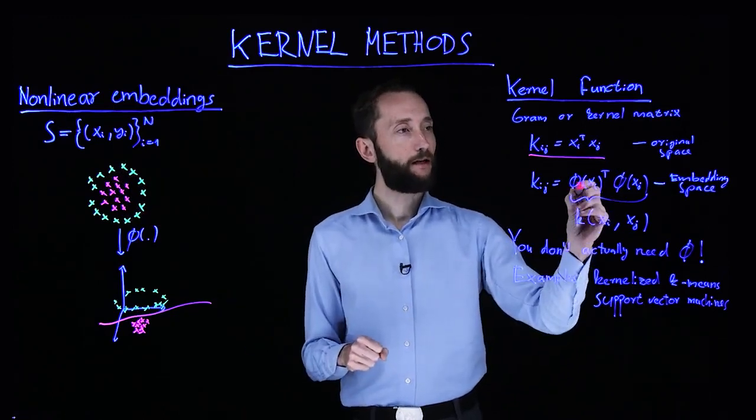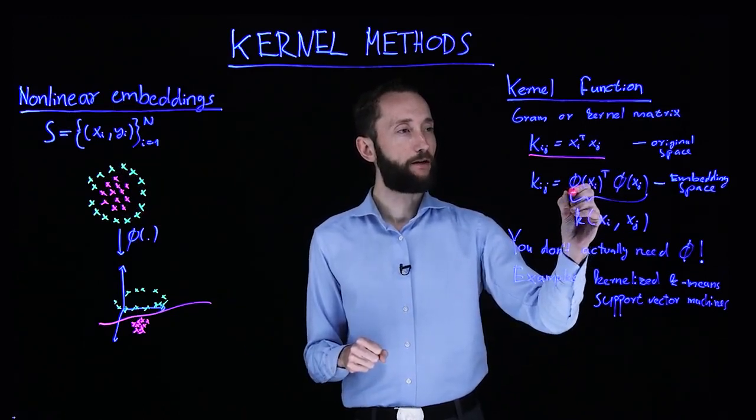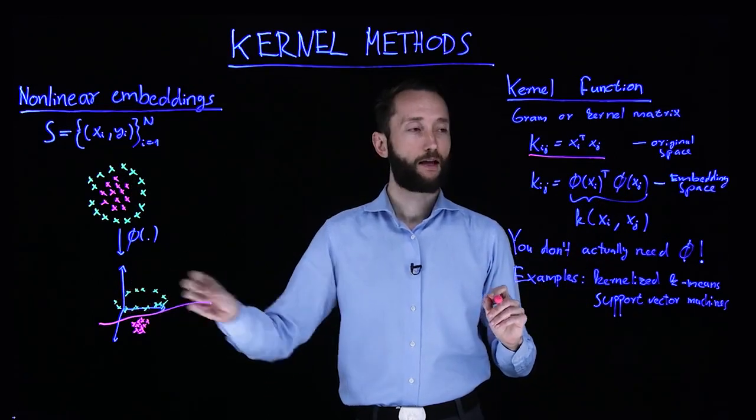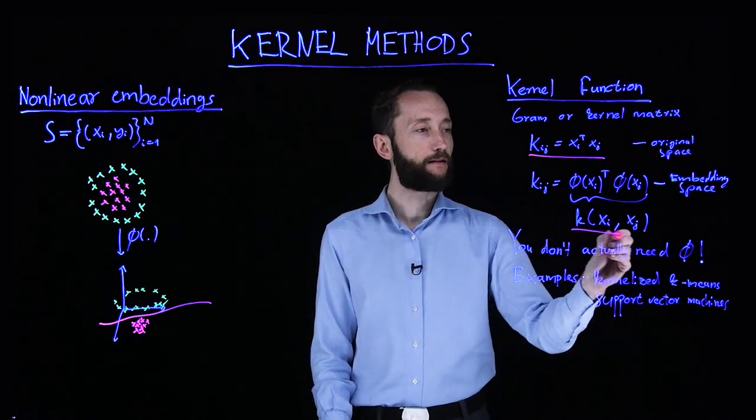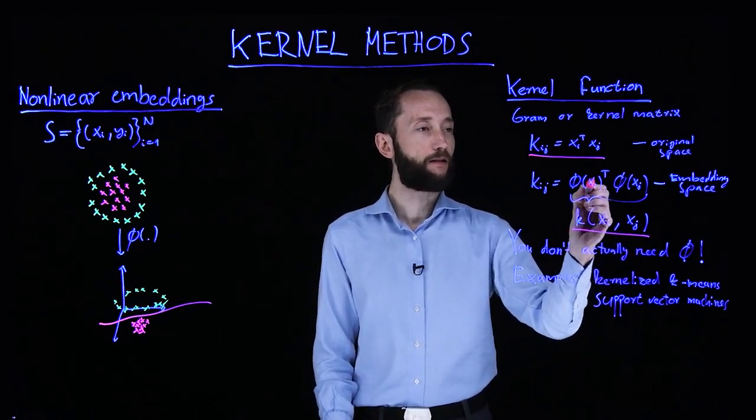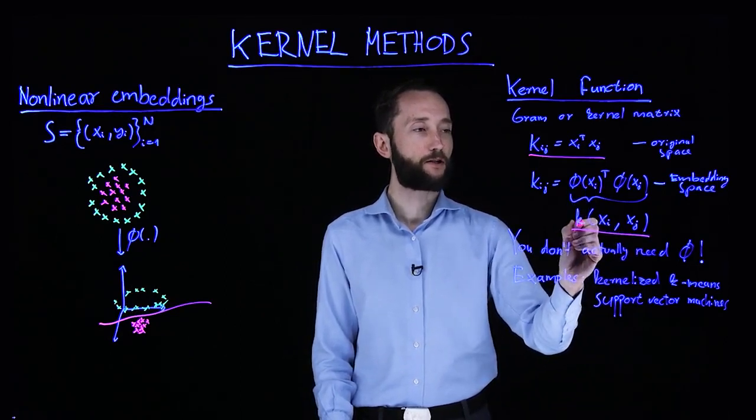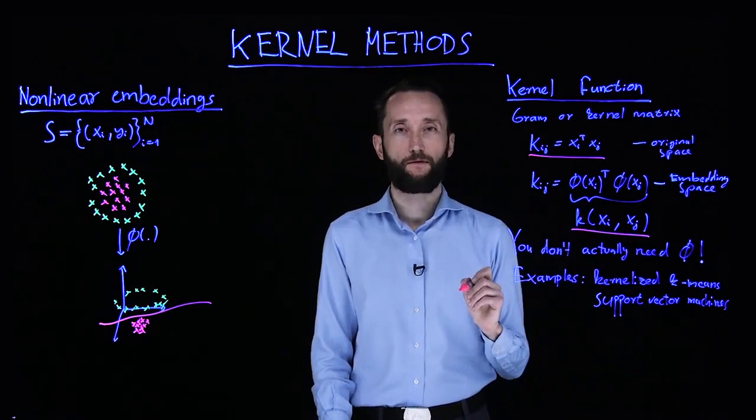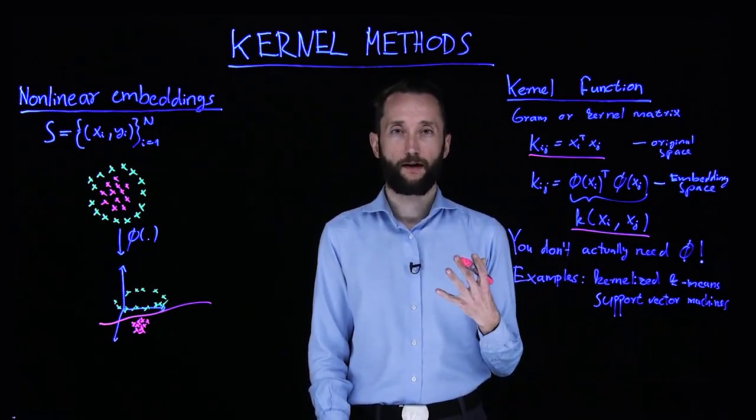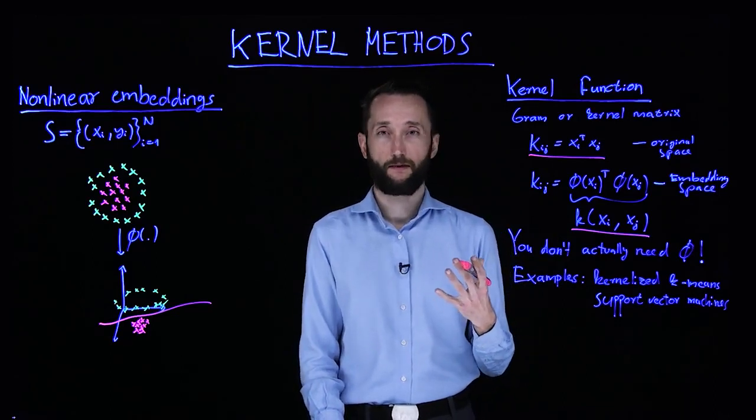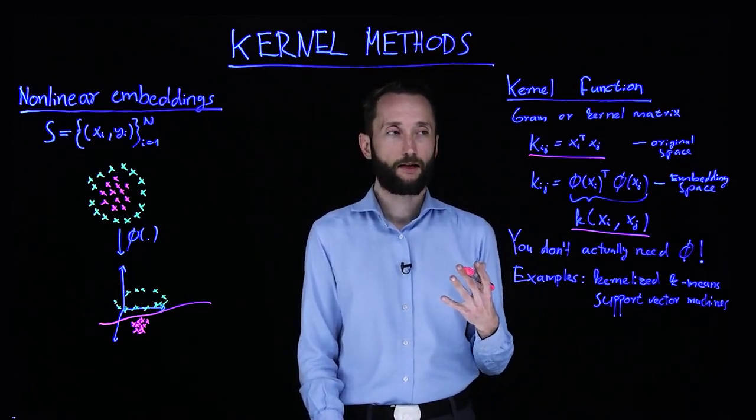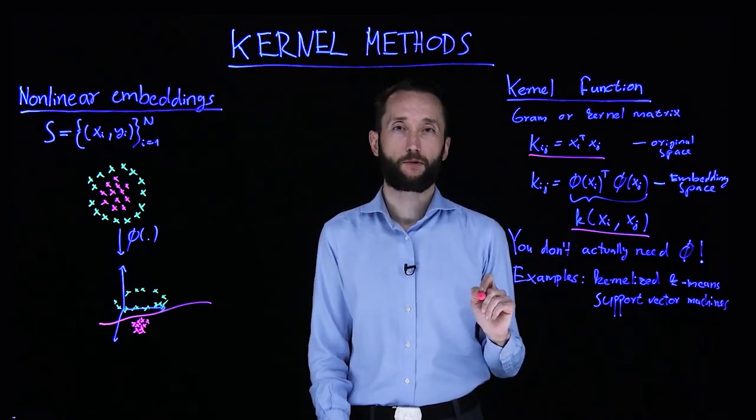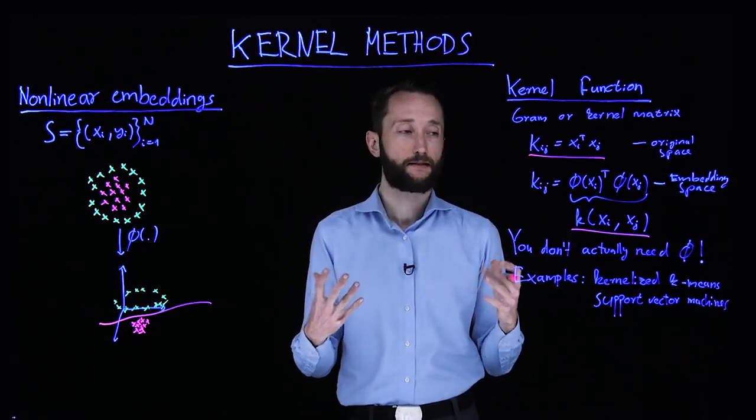And after embedding, you can calculate the inner product between these embedded vectors. And now you can define that this inner product in the embedded space is actually just some function, some kernel function. And it turns out that if this function fulfills certain basic requirements, namely it's a positive semi-definite kernel, then you don't actually have to know the phi embedding. It's enough to calculate this product, which is very cheap in many cases. And you can construct very interesting algorithms.